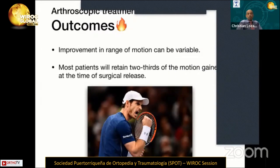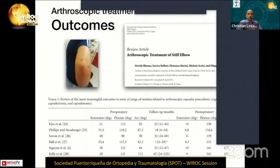The outcome of arthroscopic treatment shows that improvement in range of motion can be variable — most patients will retain approximately two-thirds of the motion gained at the time of surgical release. Some range of motion will be lost in the weeks following surgery. The published results confirm that arthroscopic treatment of stiff elbow yields more range of motion improvement compared to open surgery.